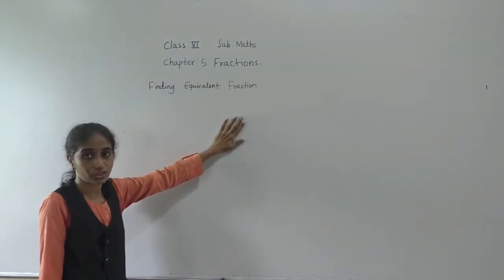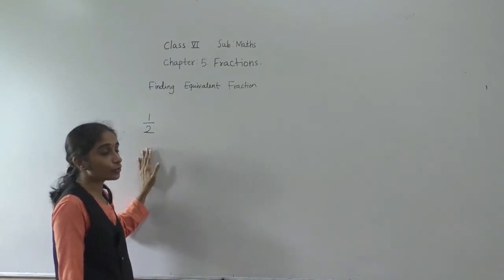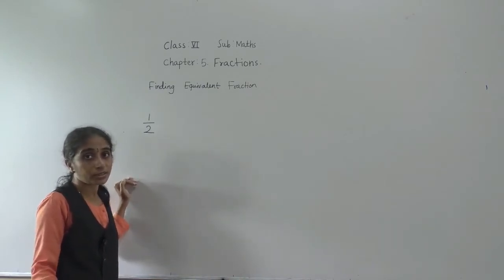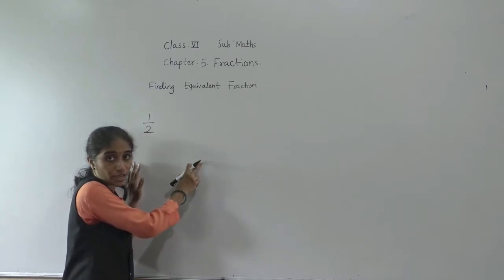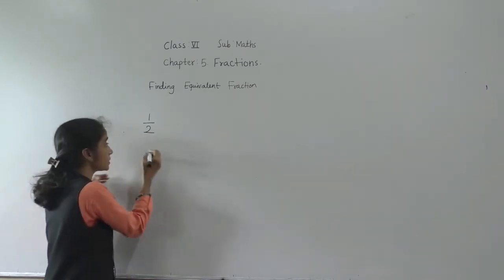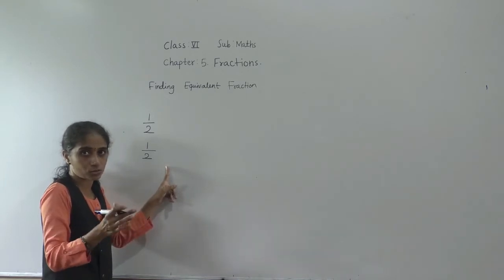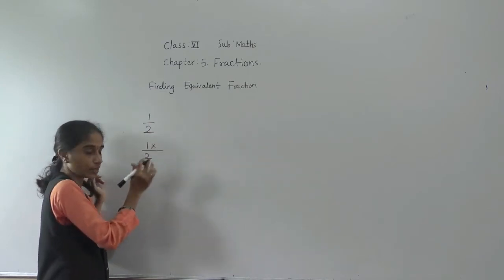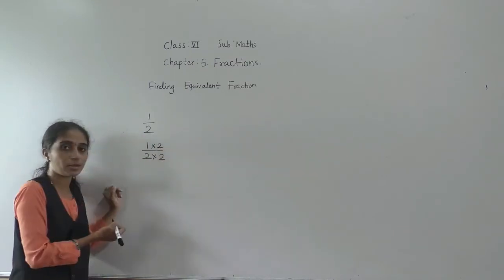Now let's learn finding equivalent fractions. For example, one upon two is the given fraction. To find equivalent fractions, for the numerator and denominator, we have to multiply by the same non-zero number. Non-zero number means any number except zero. So, multiplying numerator and denominator both by two: two ones are two, two twos are four. We get the equivalent fraction two upon four.